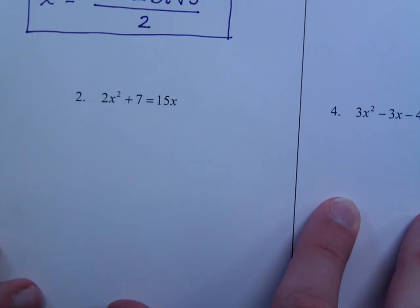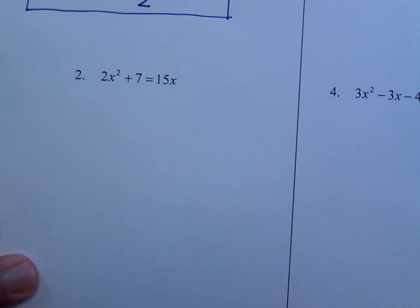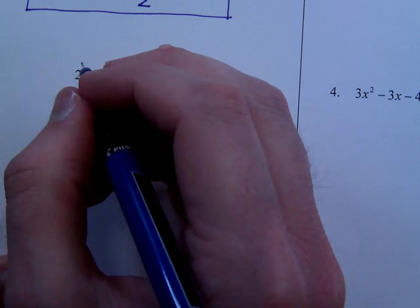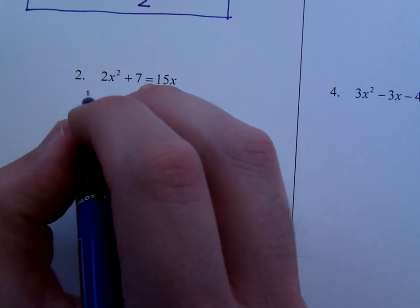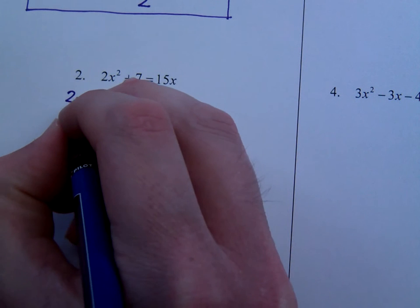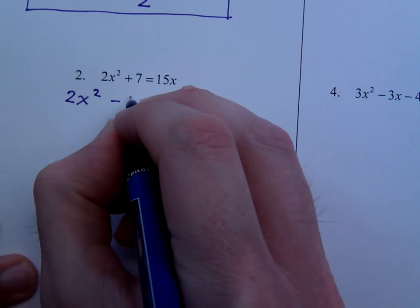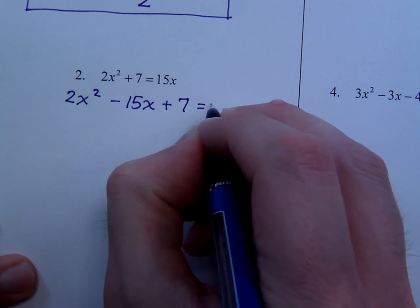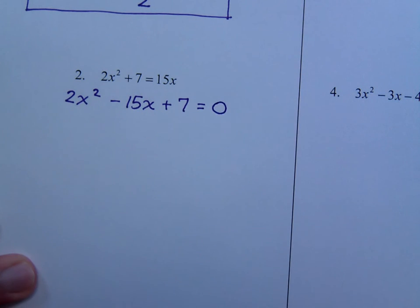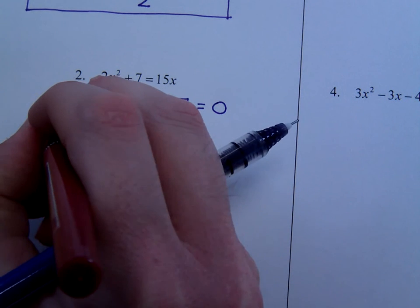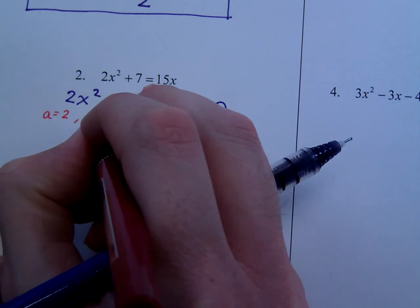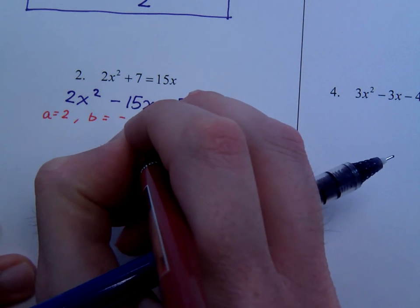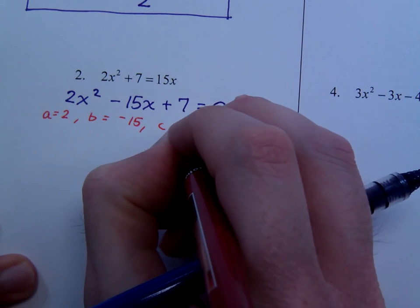So let's look at number 2. In order for us to use the quadratic formula, we have to have everything on one side of the equation and it needs to be in descending order. So when I move the 15x over, it's 2x squared minus 15x plus 7 is equal to 0. Your a in this case is 2, b is negative 15, watch your signs, and c is 7.